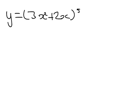And we're going to treat 3x squared plus 2x initially just as a single variable and differentiate that. And then we're going to multiply our answer by the inner function differentiated.